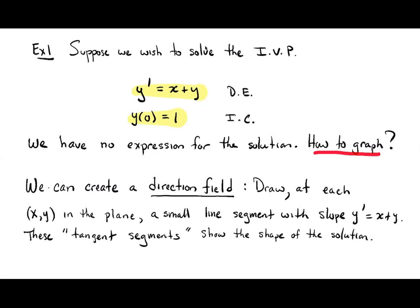How can I possibly graph a function when I have no expression for it? That's exactly what a direction field does. For every (x,y) in the plane, I'm going to compute the slope using my differential equation — I think of y prime as a slope. At each point (x,y) in the plane, I draw a small line segment with that slope y prime. If we draw enough of them, we see a bunch of little tangent segments, and those tangent segments must be tangent to the solution curves.